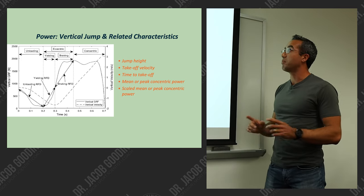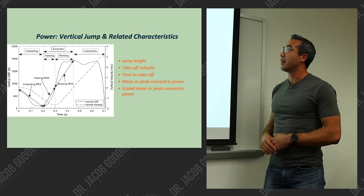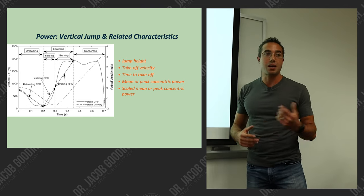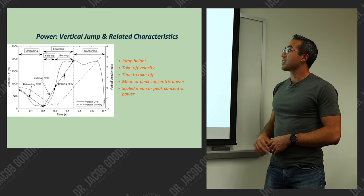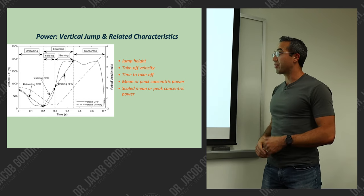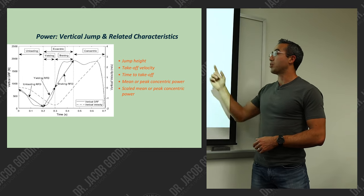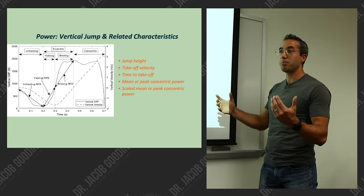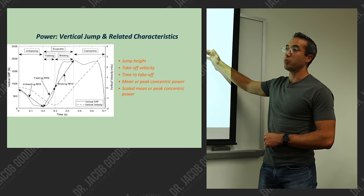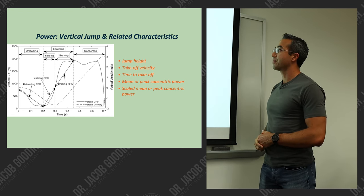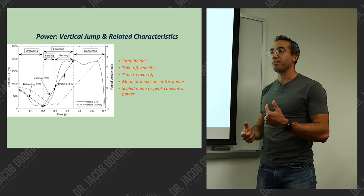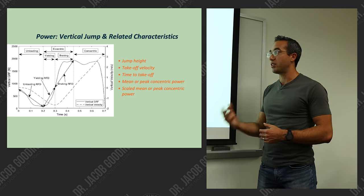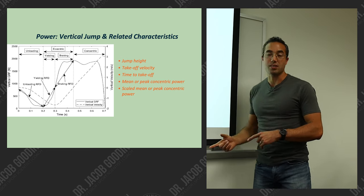Moving on to power benchmarks: the vertical jump and associated characteristics. Of course we have jump height, but there are other jump characteristics we can look at: takeoff velocity, time to takeoff, RSI, mean or peak concentric power, and scaled mean or peak concentric power. Jump height is nice because it's almost a way to automatically scale it to body mass because of gravity. If you have a larger individual, they will not jump as high with the same power output as a lighter individual.